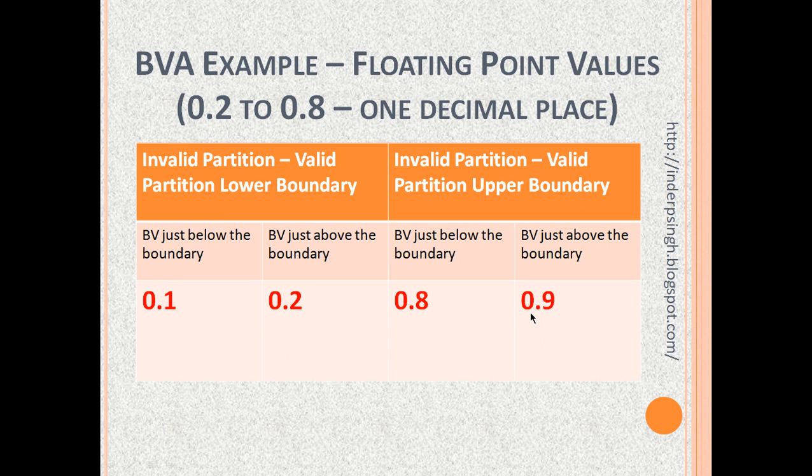This is what there is to Equivalence Partitioning and Boundary Value Analysis test design techniques. Instead of picking values at random, you can use these techniques to get more value in testing — saving time and finding more defects. In Equivalence Partitioning, valid and invalid partitions are treated differently by the system. In Boundary Value Analysis, values just below and above the boundary are treated differently. Using both techniques, you can save time and find more defects.